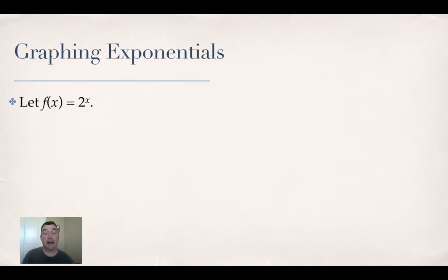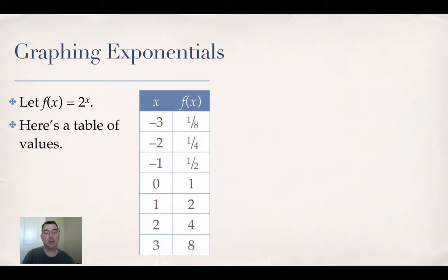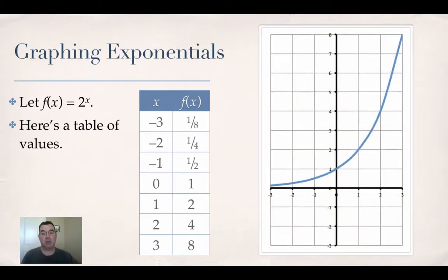When we graph them, we're going to start out with the parent function, which is 2 to the x. Here's a table of values. So when x is negative 3, f of x is 1 eighth. When x is negative 2, f of x is 1 fourth, and so on down the table. So here's what the graph looks like. There's your graph of 2 to the x.